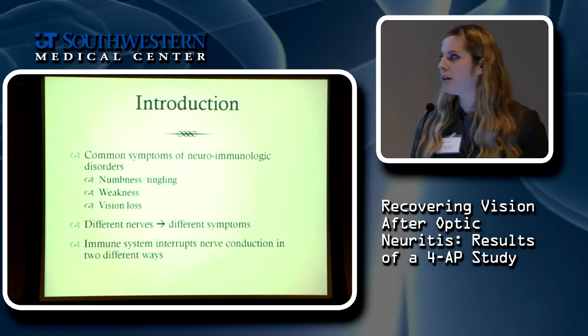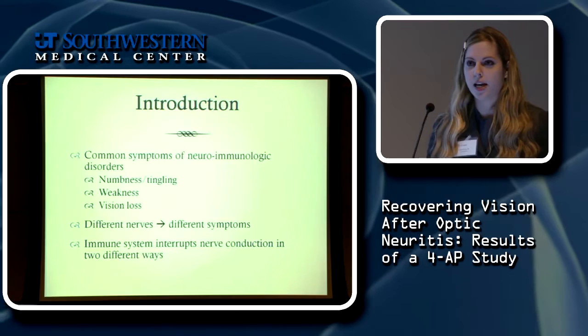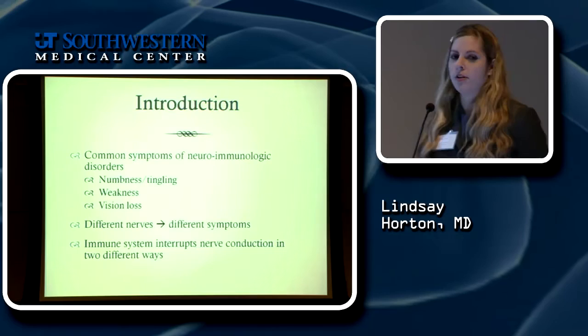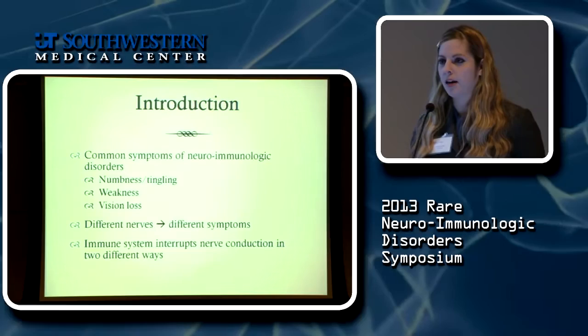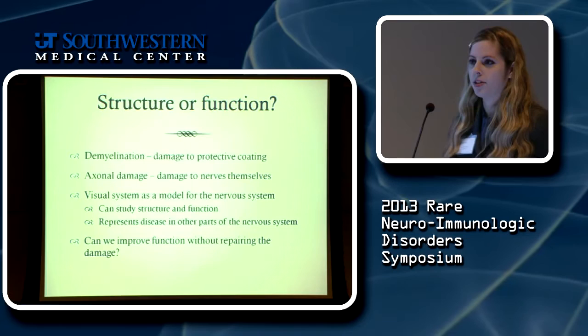In our study we were researching optic neuritis, but even if you don't have vision trouble it could still be applicable to your symptoms, because the studies we did can tell us about nerve damage in the rest of the body as well. When you have a neuro-immunologic disorder, the immune system generally attacks the nervous system in two different ways to cause trouble with conduction.